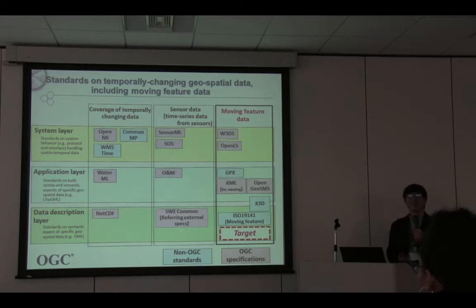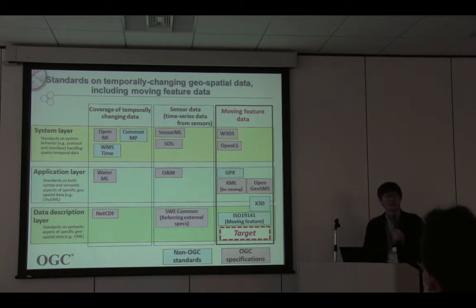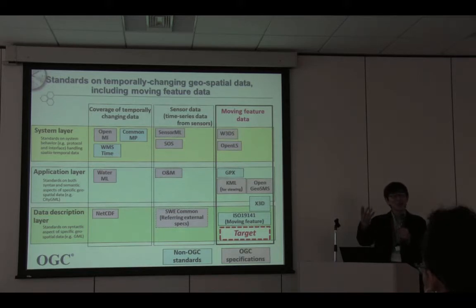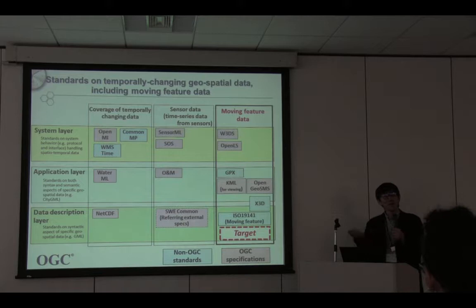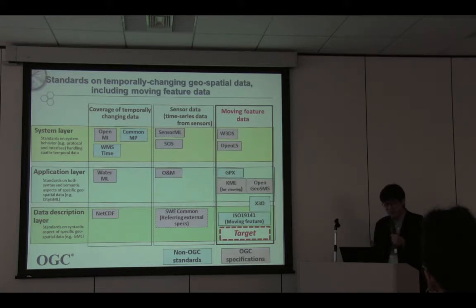Going back to the standards: there are a lot of moving feature data, but as I mentioned, such data must be combined with other data sources — typically background map data, background environmental data, and also simulation data. That is also represented by a collection with the moving feature data. However, there is no such standard for data exchange. That is the starting point. We investigated what kinds of standards could be applied for representing moving data — moving features or temporally changing geographic data.